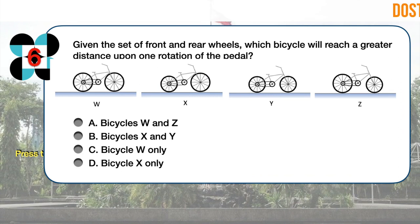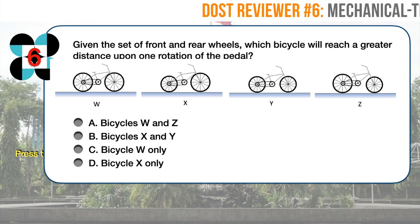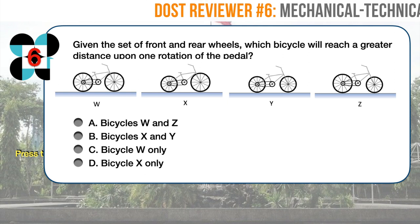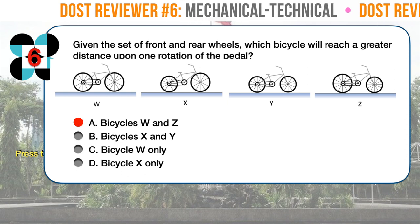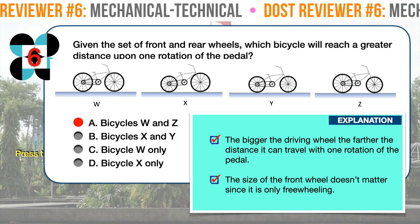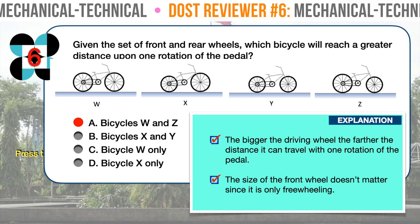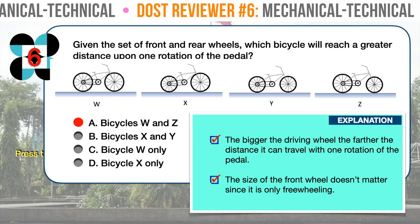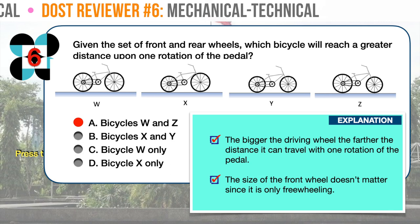Question number six. Given the set of front and rear wheels, which bicycle will reach a greater distance upon one rotation of the pedal? The correct answer is A: bicycles W and Z. The bigger the driving wheel — that is, the rear wheel — the farther the distance it can travel with one rotation of the pedal, because the circumference is larger compared to a smaller driving wheel. The size of the front wheel is of no consequence since it is only free wheeling. There are two bicycles with a bigger driving wheel: bicycles W and Z.